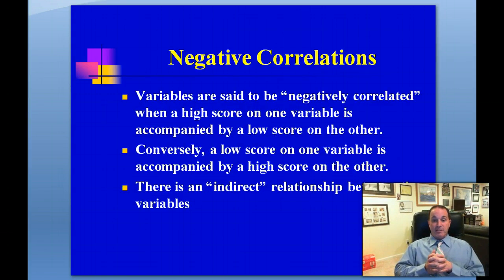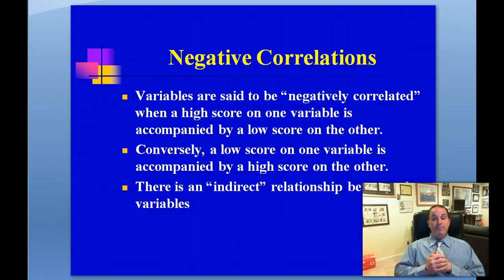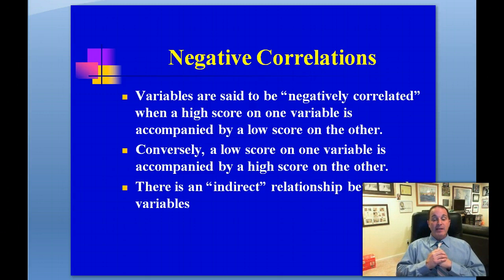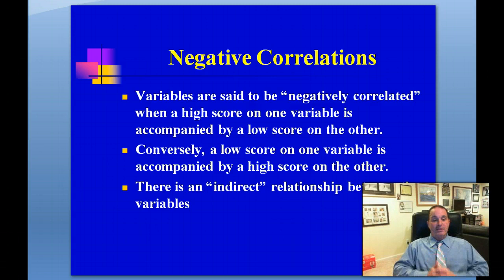Negative correlations happen when a high score on one variable is accompanied by a low score on the other, and conversely, a low score on one variable is accompanied by a high score on the other. As one variable increases, the other decreases — there is an indirect relationship between the variables.